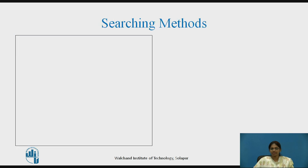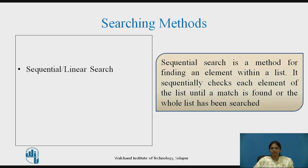Searching Methods — Sequential Search or Linear Search: A sequential search is a method for finding an element within a list. It sequentially checks each element of the list until a match is found or the whole list has been searched.